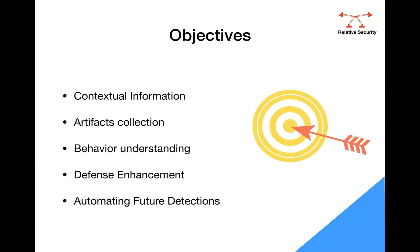The second objective is artifacts collection — what actions the malware is performing, what hashes are seen in those attacks, what URLs or links are used to connect to the internet, what processes are executed, and what behavioral changes are made on the system. Hashes, IPs, URLs, and internet connections — these are called artifacts that you can extract from malware analysis.